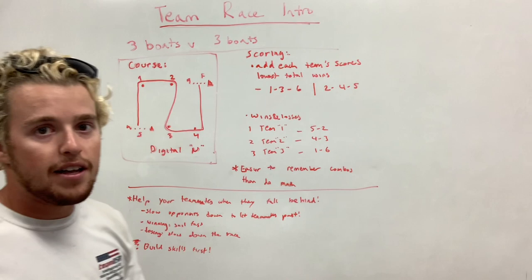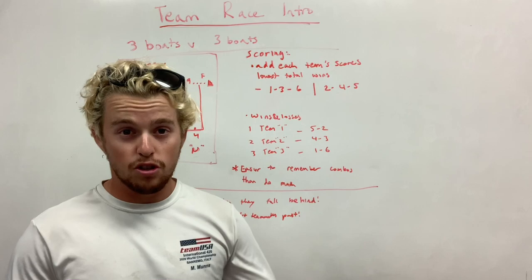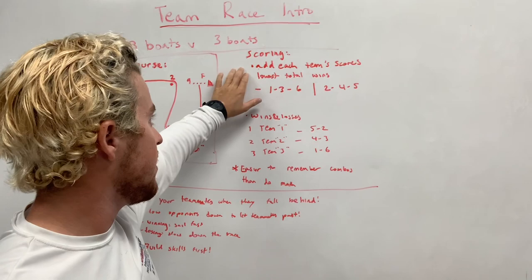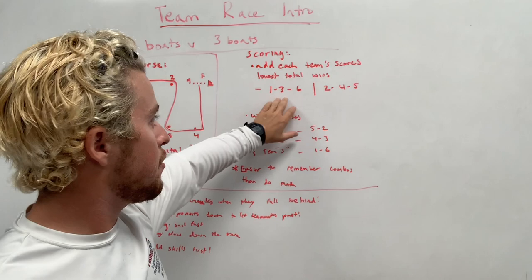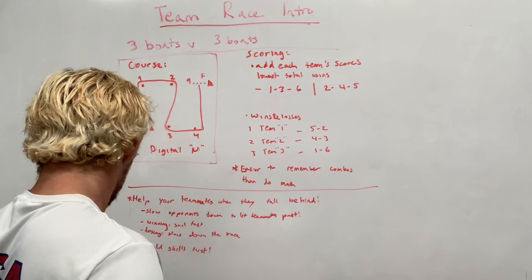Now let's talk about how team racing is scored. Team racing is scored by adding each team's scores up at the end of each race, and the lowest total wins. So right here we have a one-three-six versus a two-four-five.